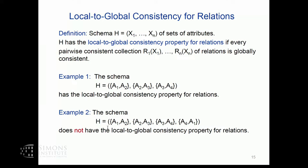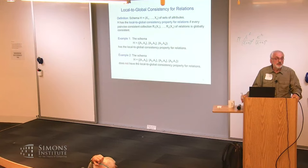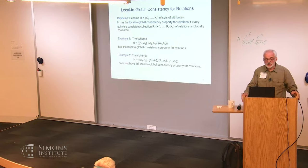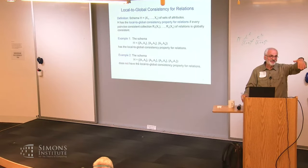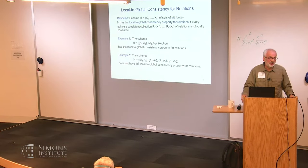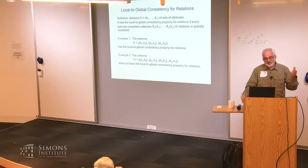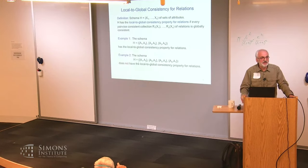Question: is there a reason we define 'local' as pairwise and not, say, three-wise consistency? If you have global consistency, you have k-wise consistency for every k less than m, where m is the number of relations. The local-to-global was the minimum one, and it works — for this schema it works for higher situations as well.